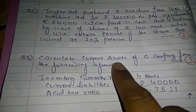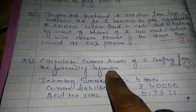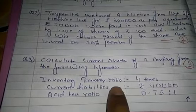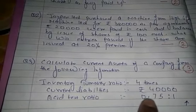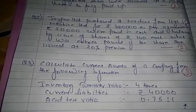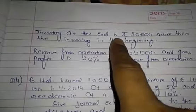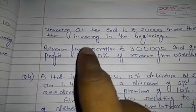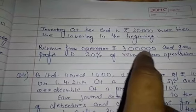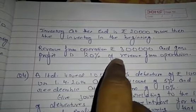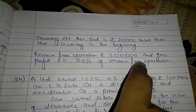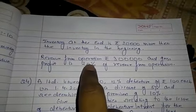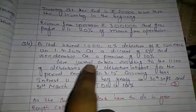Question three is from the chapter accounting ratios. Calculate the current assets of the company from the following information: inventory turnover ratio 4 times, current liabilities rupees 40,000, quick ratio 0.75:1, inventory at the end is rupees 20,000 more than inventory at the beginning, revenue from operations rupees 3,00,000, and gross profit is 20% of revenue from operations. This is of three marks.